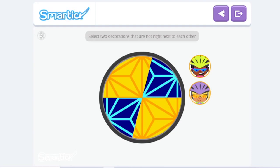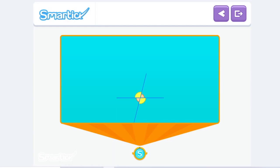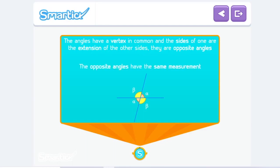Select two decorations that are not right next to each other. This one and this one. Perfect! The angles of the sides of these two decorations are equal, because the decorations are the same. The angles have a vertex in common. And the sides of one are the extension of the other sides. They are opposite angles. The opposite angles have the same measurement.